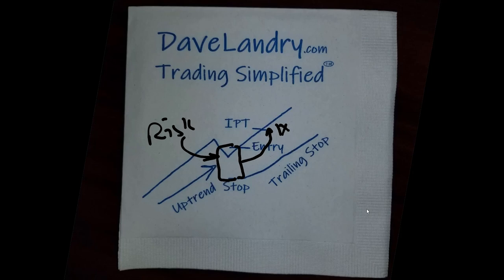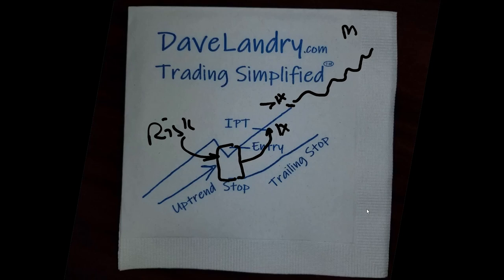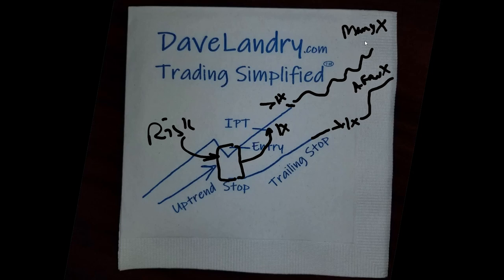We're risking 1x and we're going to take partial profits — IPT means initial profit target — when we're up 1x. So if we risk two points on this trade, when we're up two points we pull off half of those shares, and at that point our stop is trailed up to break even. Then we stay with the trend as long as we can and ideally make many times what we originally risked. We gradually loosen up the stop to give it breathing room so the longer-term trend can continue.